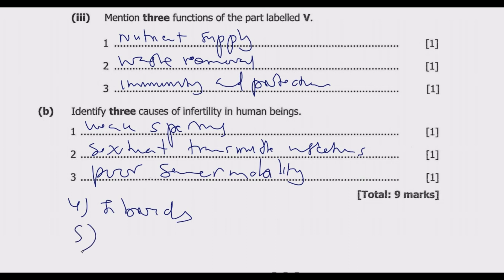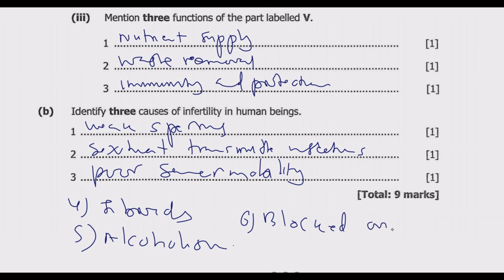Fifth, alcoholism — excessive alcohol consumption can negatively impact fertility in both men and women. In men, it can reduce testosterone levels affecting sperm quality and quantity. In women, it can cause hormonal imbalances affecting ovulation and the menstrual cycle. Sixth, blocked oviducts — blocked fallopian tubes prevent the sperm from reaching the ovum for fertilization. This blockage can be caused by scar tissue, infections, or surgeries. You can choose any three of these to answer the question and get full marks.